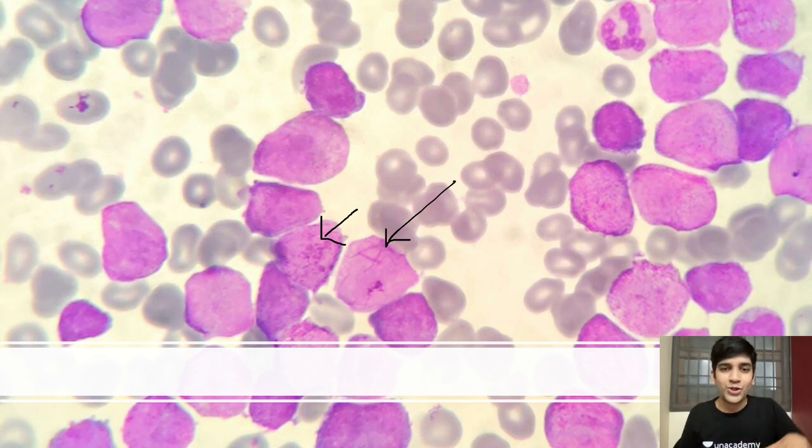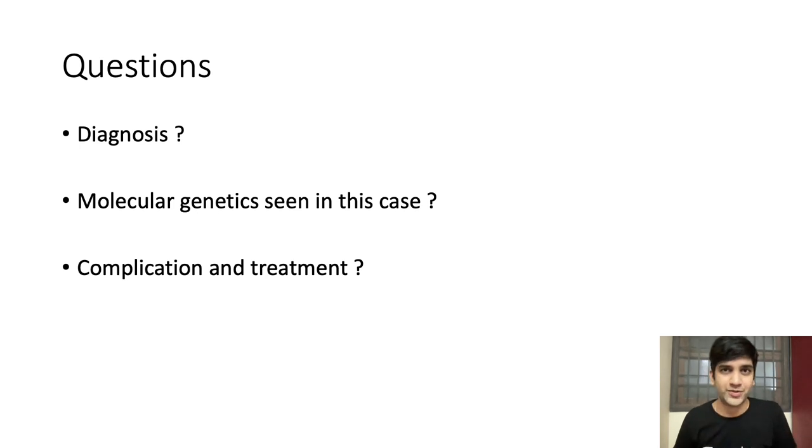So first thing, I want you to write the symptoms, write the findings, whatever we saw. And the first question for today is the diagnosis. It's a very, very classical diagnosis, hematological malignancy. That's a clue for you guys. Then I want you to name the molecular genetics, which I would commonly expect in this case. Third, the complication of this case, which is deadly. I want you to name that. And fourth, if possible, name the treatment of this disorder itself. I'll give you a hint. It's a leukemia. It's an acute leukemia where I saw lots of blast.